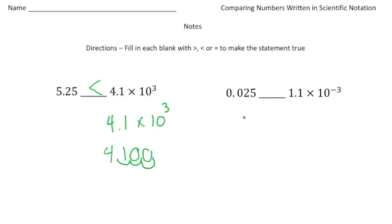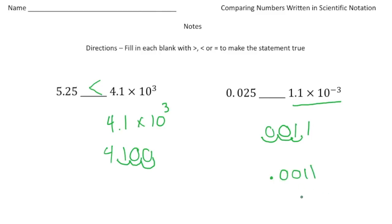Here we have 25 hundredths versus 1.1 times 10 to the negative 3rd power. Again, I'm going to convert the scientific notation to standard form. We have 1.1, and this time instead of multiplying by 1,000, I'm going to divide by 1,000 because that's what 10 to the negative 3rd is. Dividing by 10 three times, adding zeros as needed, we end up with 0.0011, which is 11 ten-thousandths. So which is bigger — 11 ten-thousandths or 25 thousandths? The answer is 25 thousandths, so the inequality sign goes like this.